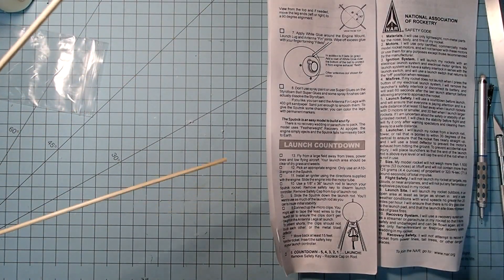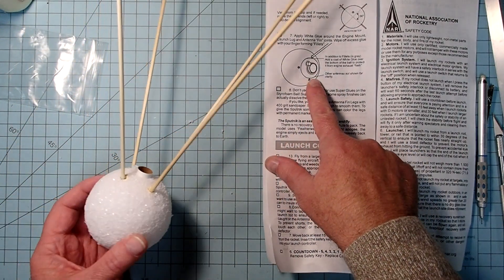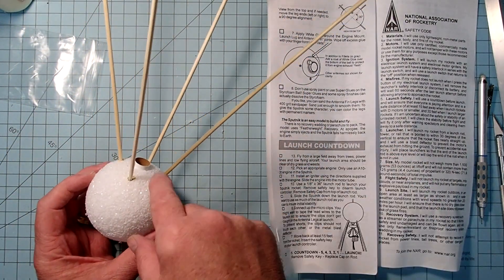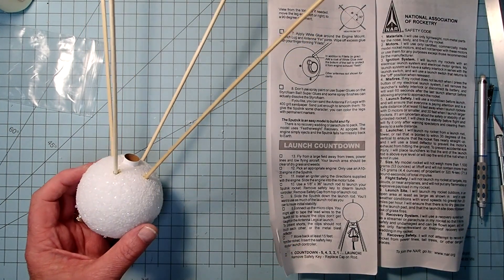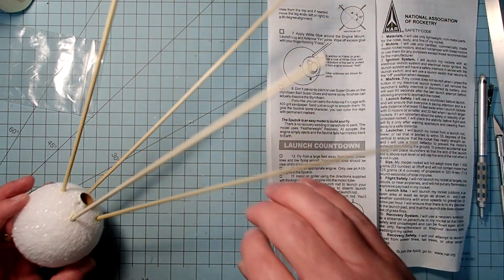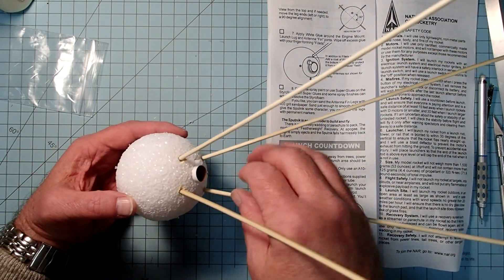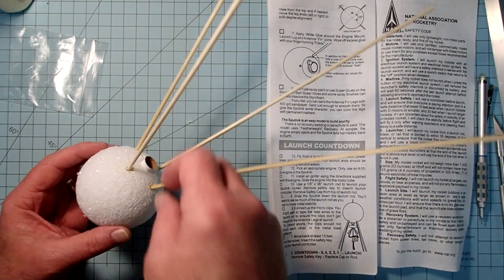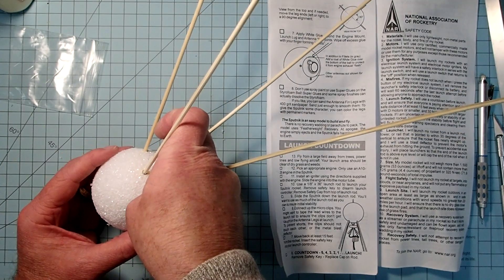Now for the motor mount and the launch lug, it just shows putting a fillet around here rather than gluing them in place. You can do that. I prefer things to be a little bit more robust than that. So I'm going to go ahead and pull this back out carefully.